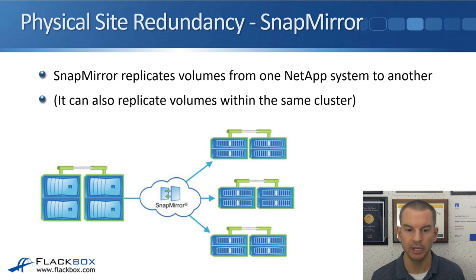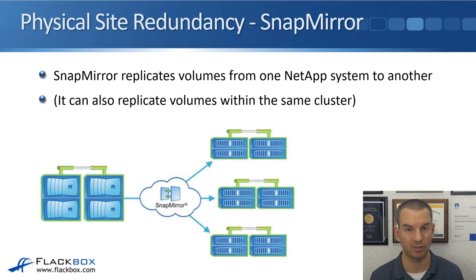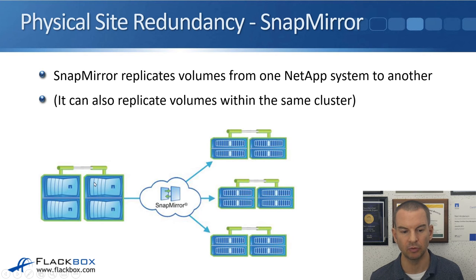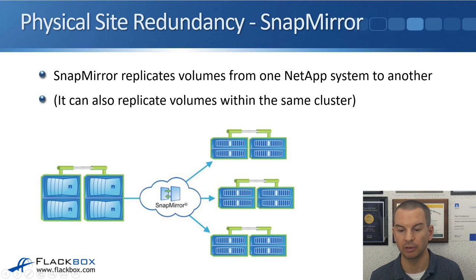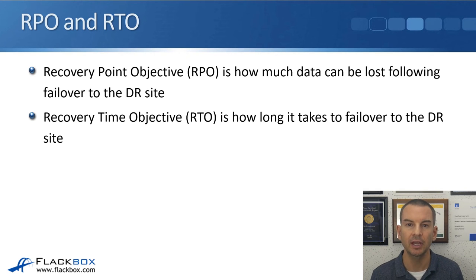SnapMirror replicates volumes from one NetApp system to another. Just like Metro Cluster, it keeps data in sync between different sites and can replicate to more than one physical site simultaneously. It can also replicate volumes within the same cluster, but by far the most common use case is between different clusters. Metro Cluster and SnapMirror do a very similar thing, so let's look at the differences between them.